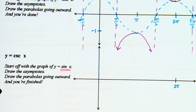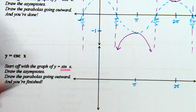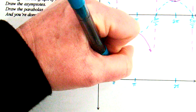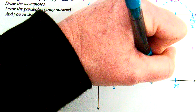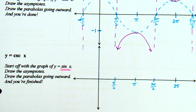What's in the middle of 2 pi? Pi. Any time we talk sine or cosine, I like to break it into fourths. So what's in the middle of 0 and pi? Pi over 2. In the middle between 1 pi and 2 pi? 3 pi over 2.